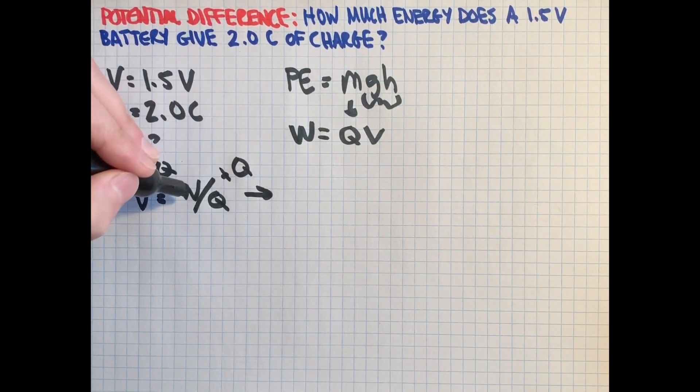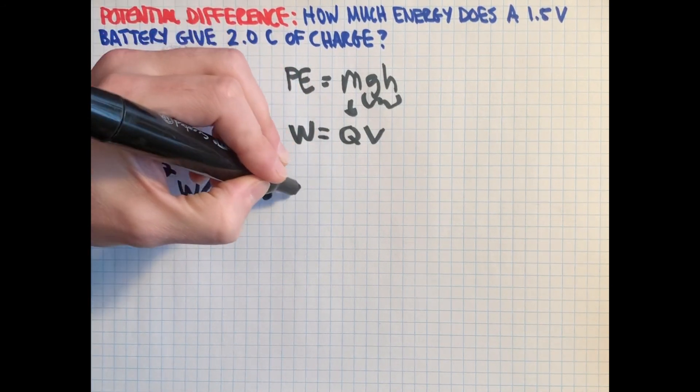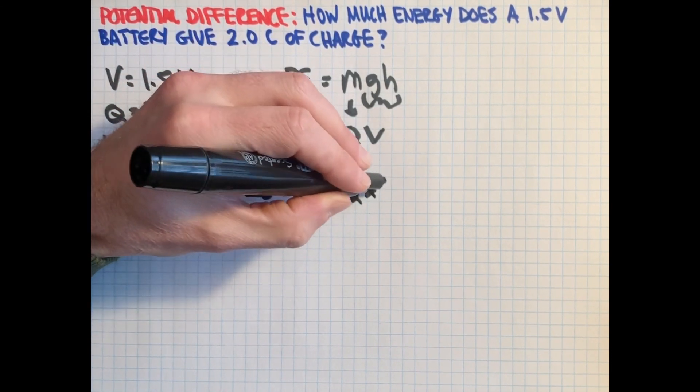And we'll see that the work will depend on how much charge is here. And that gives us an equation for work is Q times V.